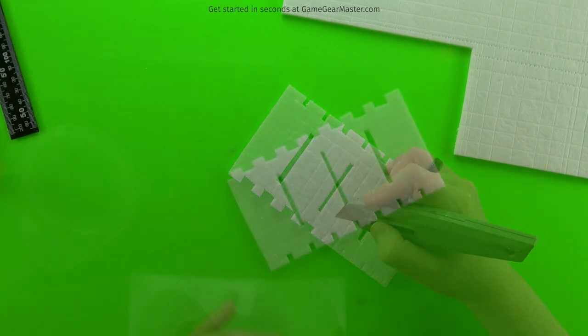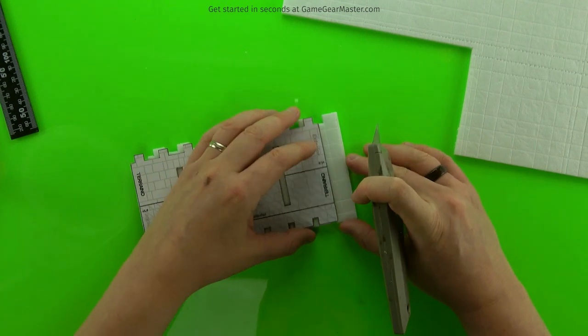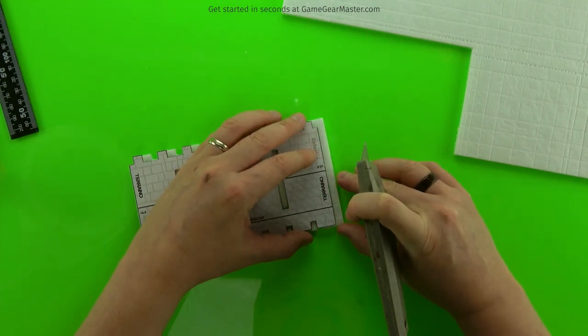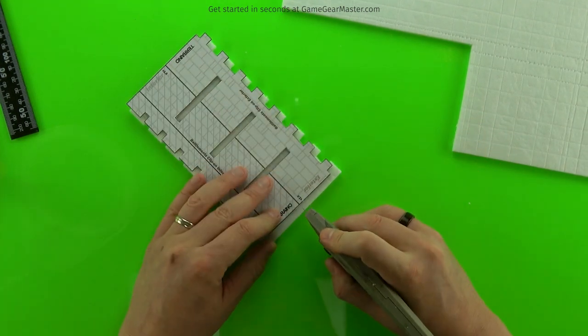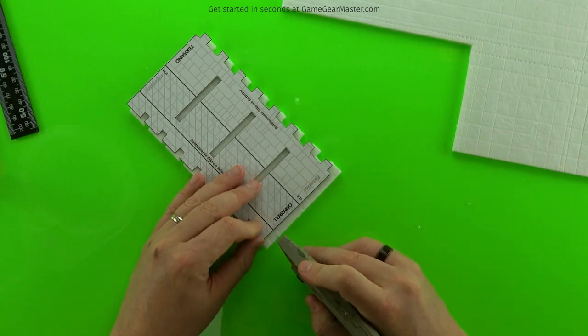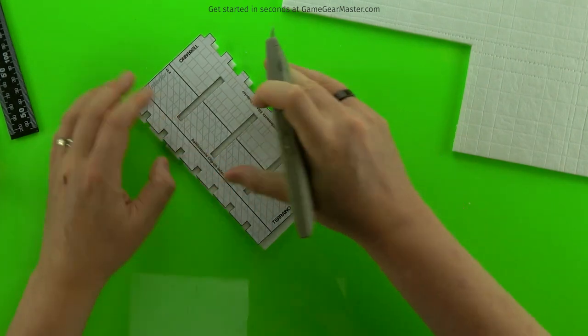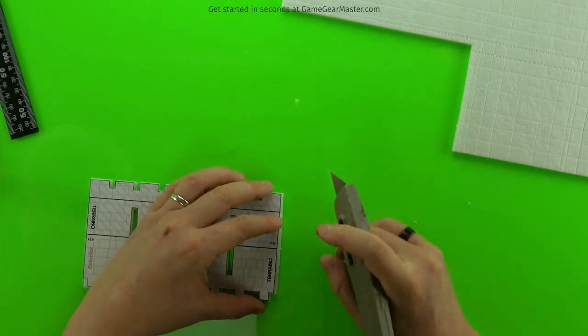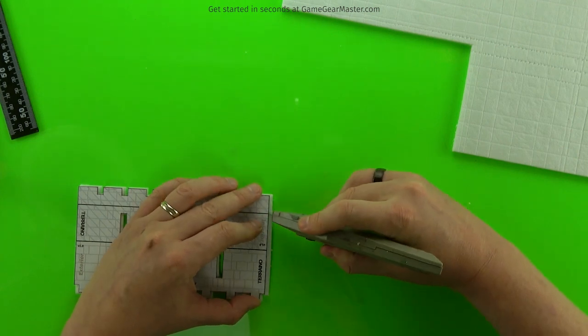You'll notice there are these black horizontal lines on the template. That denotes where the three separate components of the crenellation are to be cut out from each other. So just mark your foam, and then cut out those three different components.